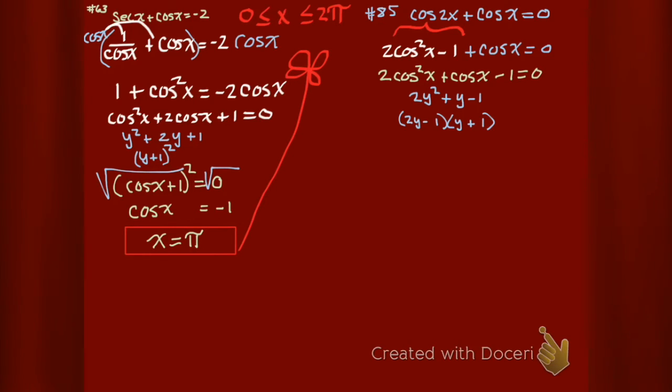But what was my y? My y was cosine x. So I'm going to stick that in there everywhere I see y. Then I'm going to set each one of those equal to zero.